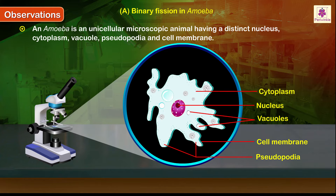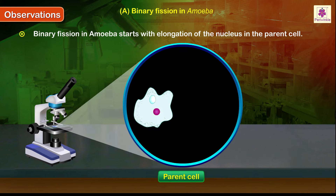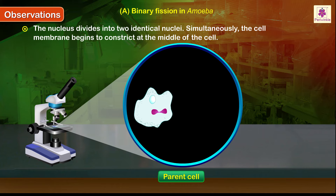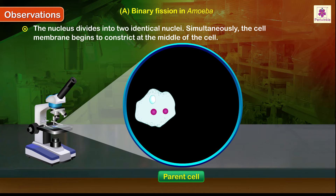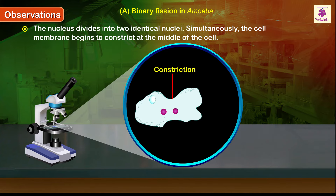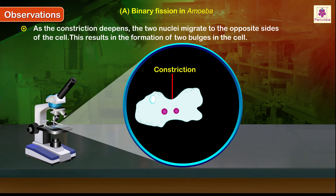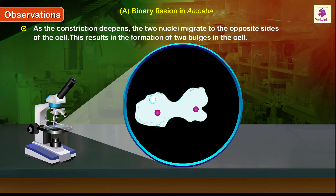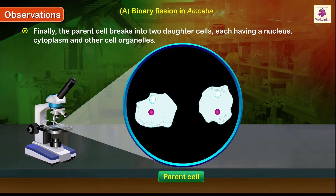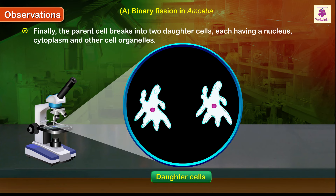Binary fission in amoeba starts with elongation of the nucleus in the parent cell. The nucleus divides into two identical nuclei. Simultaneously, the cell membrane begins to constrict at the middle of the cell. As the constriction deepens, the two nuclei migrate to the opposite sides of the cell, resulting in the formation of two bulges in the cell.